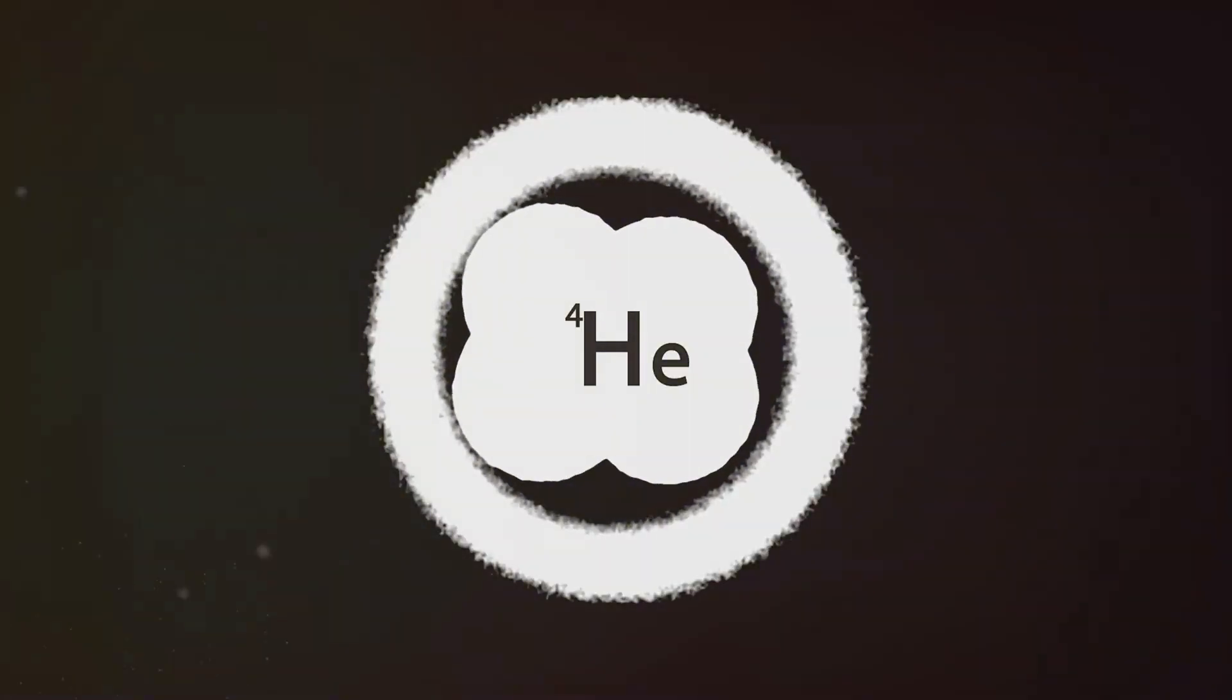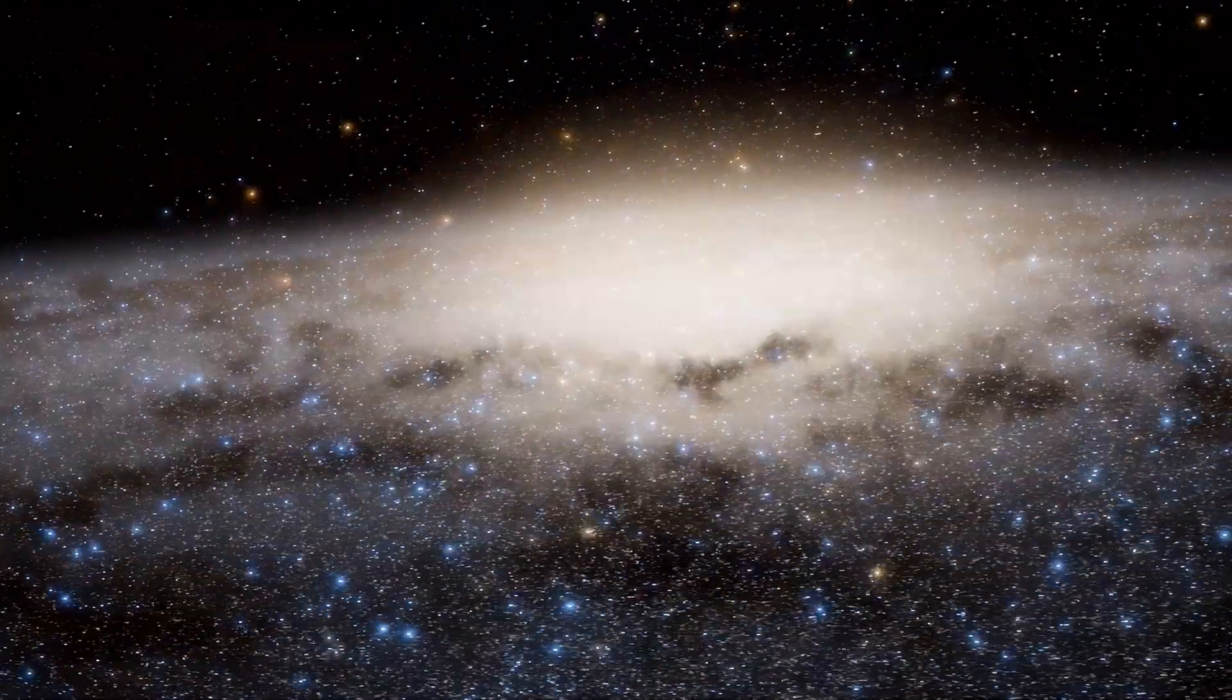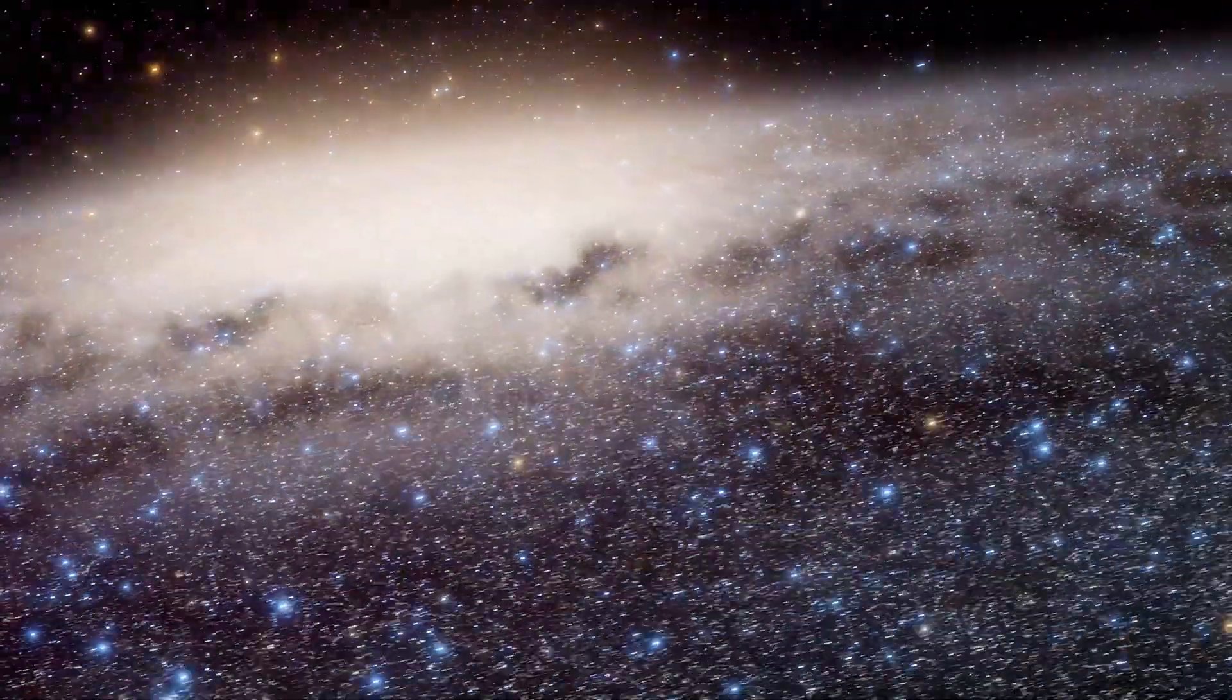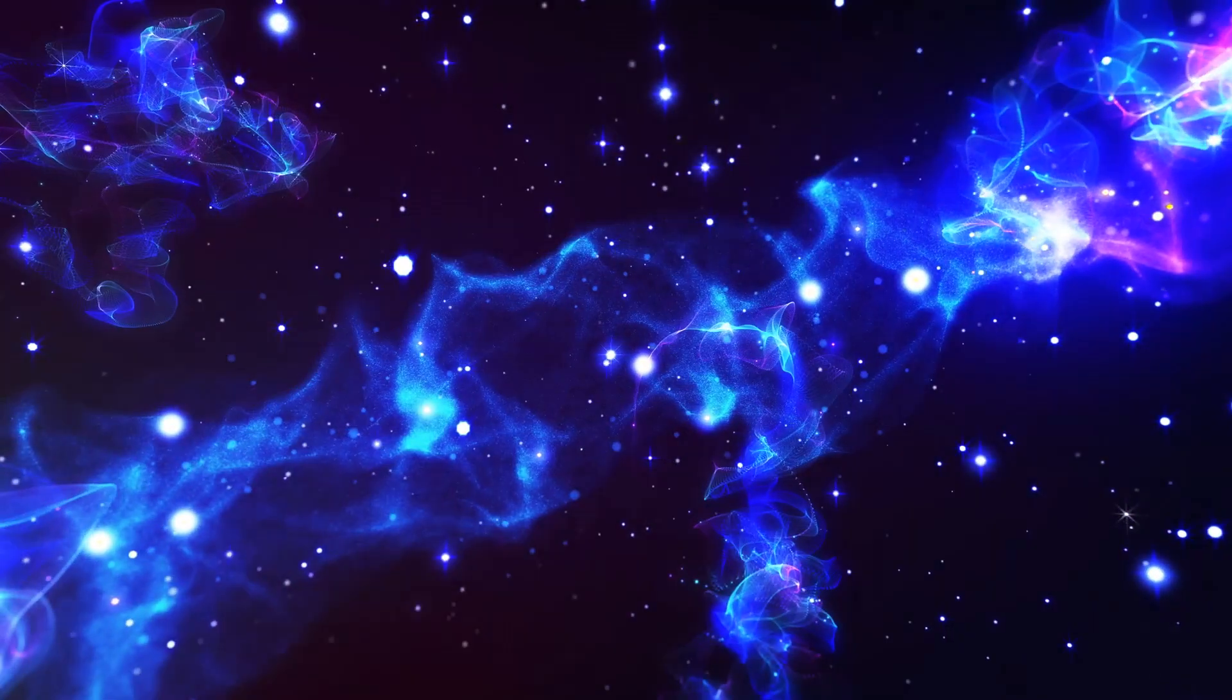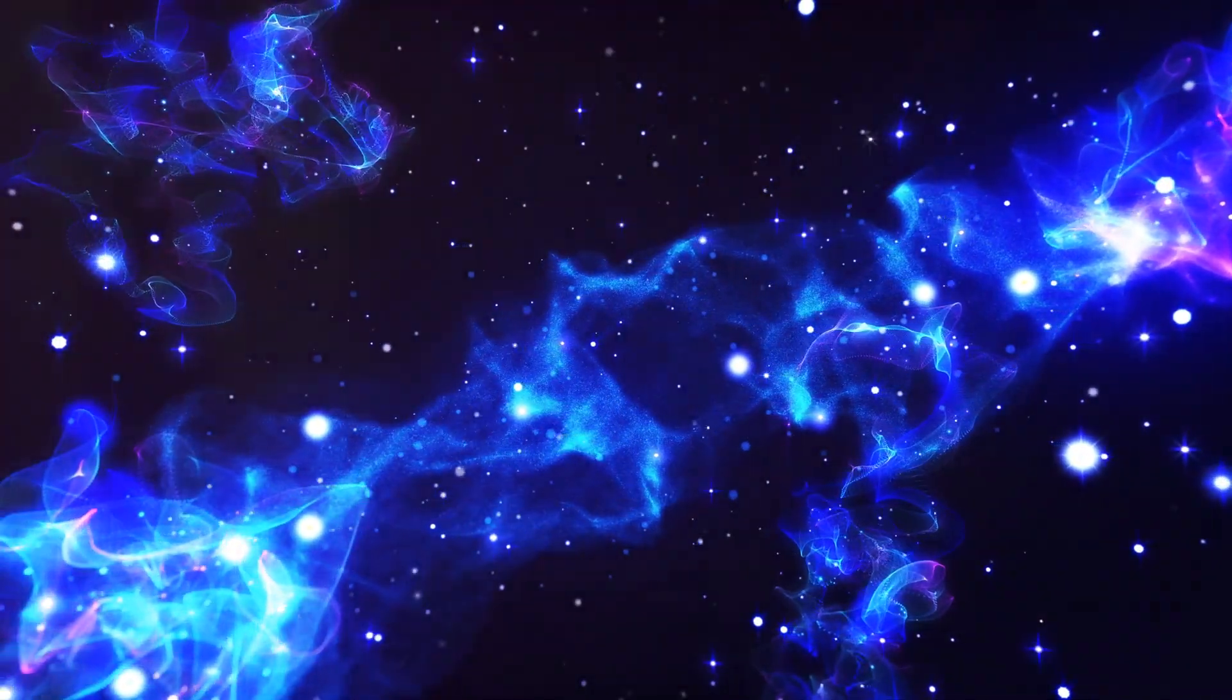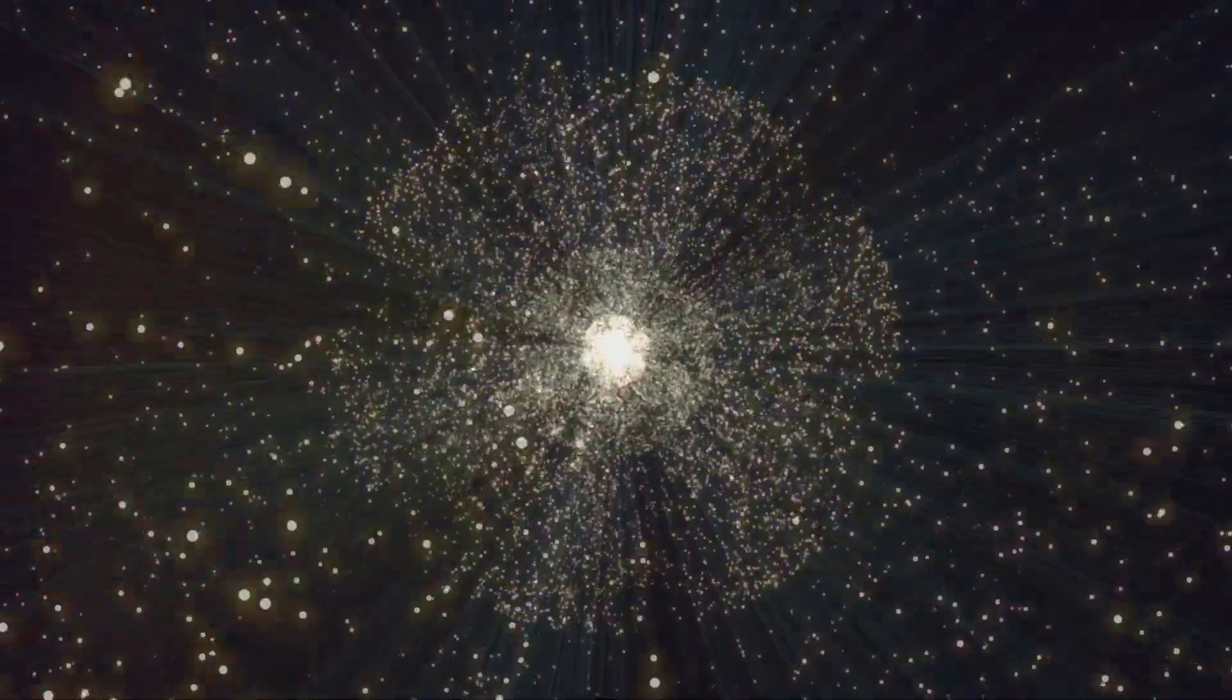But how did they form galaxies? Gravity, the silent architect, began to shape the universe around 1 billion years after the Big Bang. This fundamental force of nature took center stage, using its invisible hands to sculpt the cosmic landscape. The universe, previously a relatively uniform soup of matter, began to exhibit small fluctuations in density.